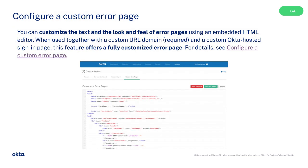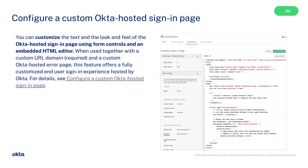Configure a custom error page offers full features for admins to customize the text, look, and feel of error pages using an embedded HTML editor. You can now customize the text and the look and feel of the Okta hosted sign-in page using form controls and an embedded HTML editor. When used together with a custom URL domain and a custom Okta hosted error page, this feature offers a fully customized end-user sign-in experience hosted by Okta.